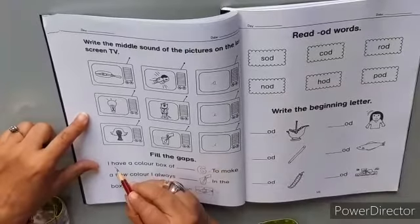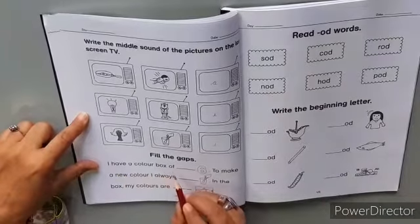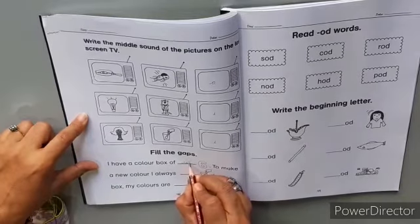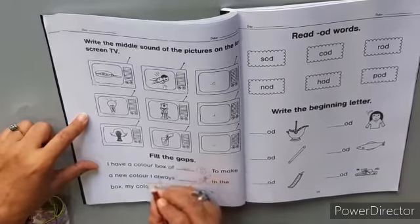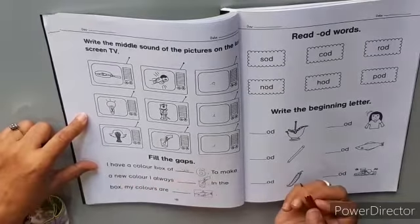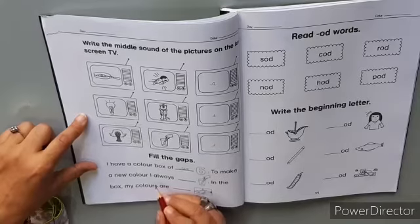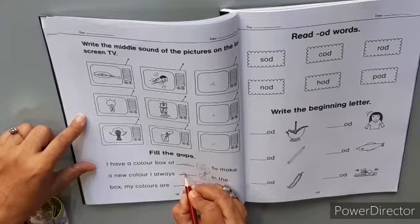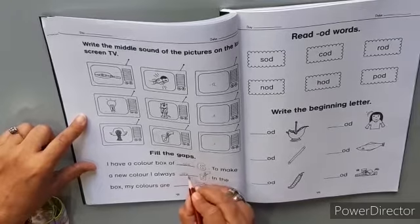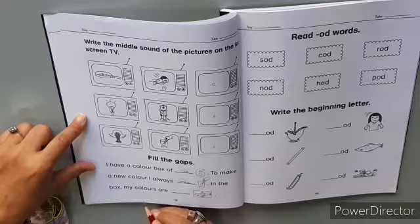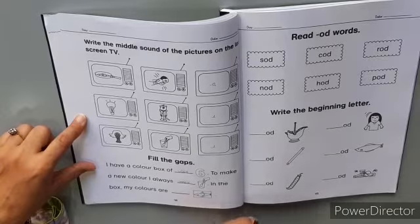Fill the gaps. I have a color box of six. To make a new color, I always mix. In the box, my colors are fixed.